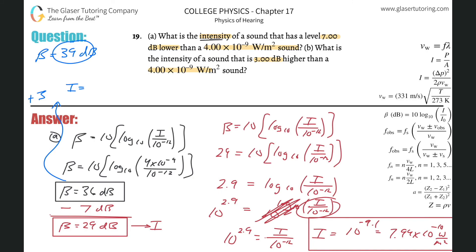10 raised to the 3.9. And then that's going to be multiplied by 10 raised to the minus 12. So this works out to be about 7.94. So 7.94 times 10 to the minus ninth.